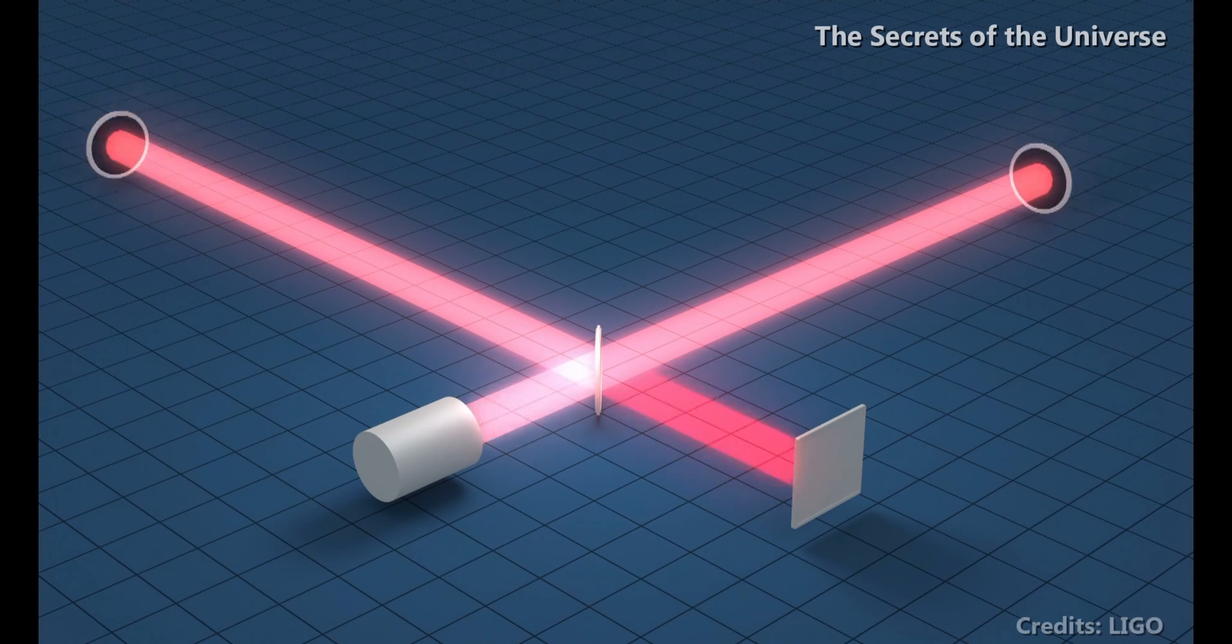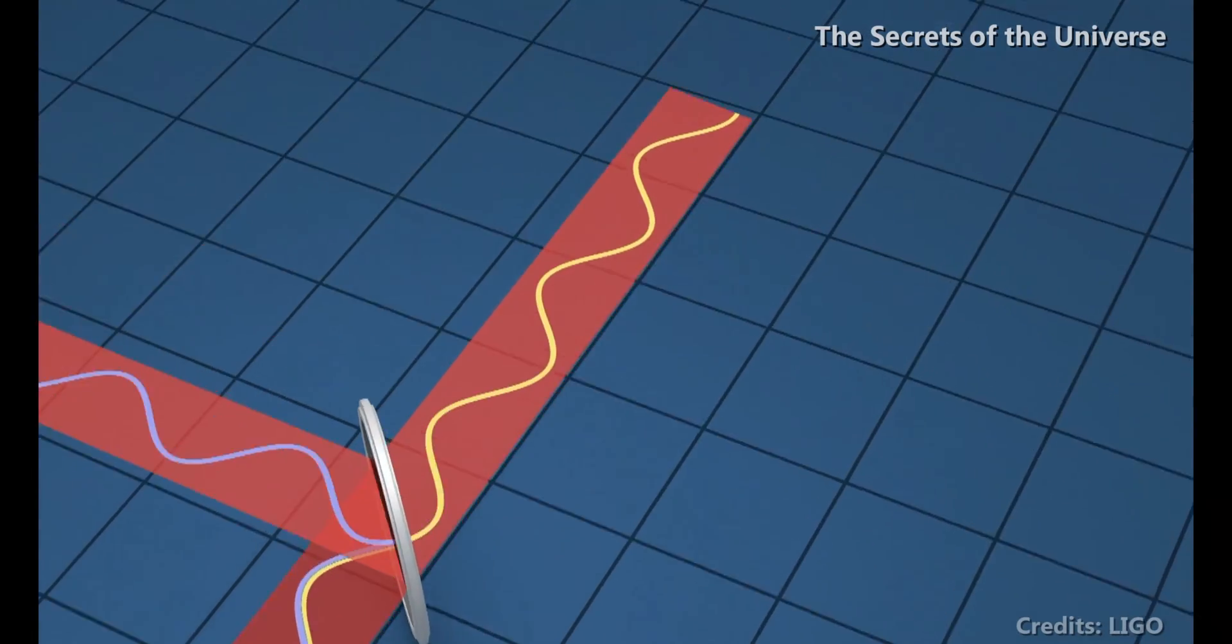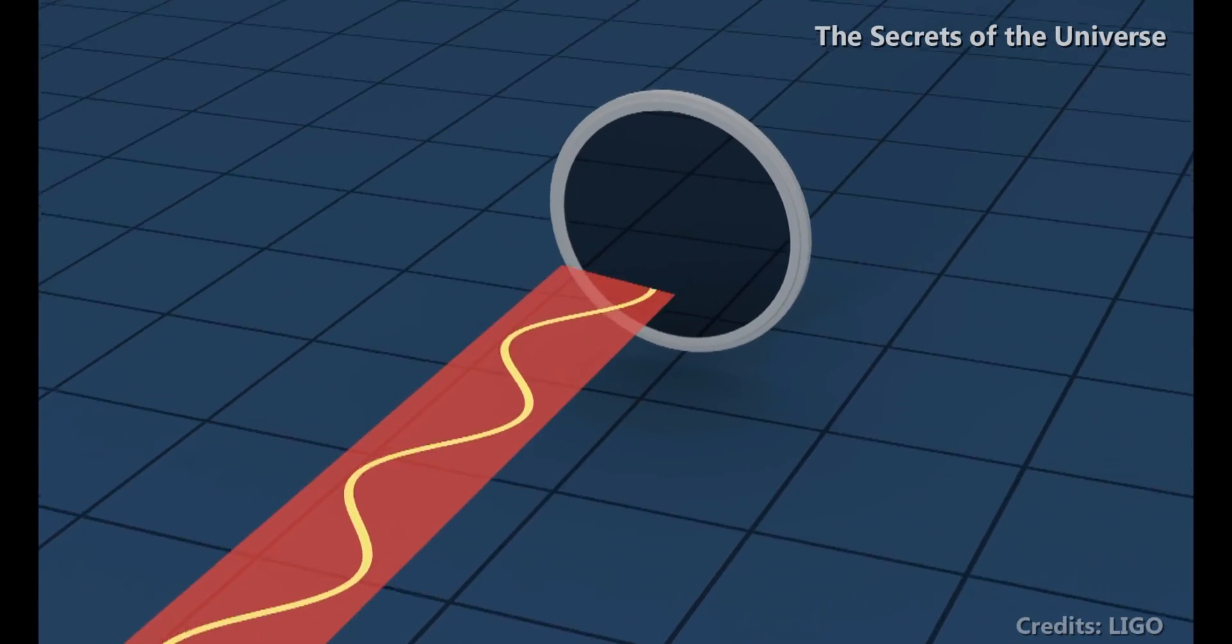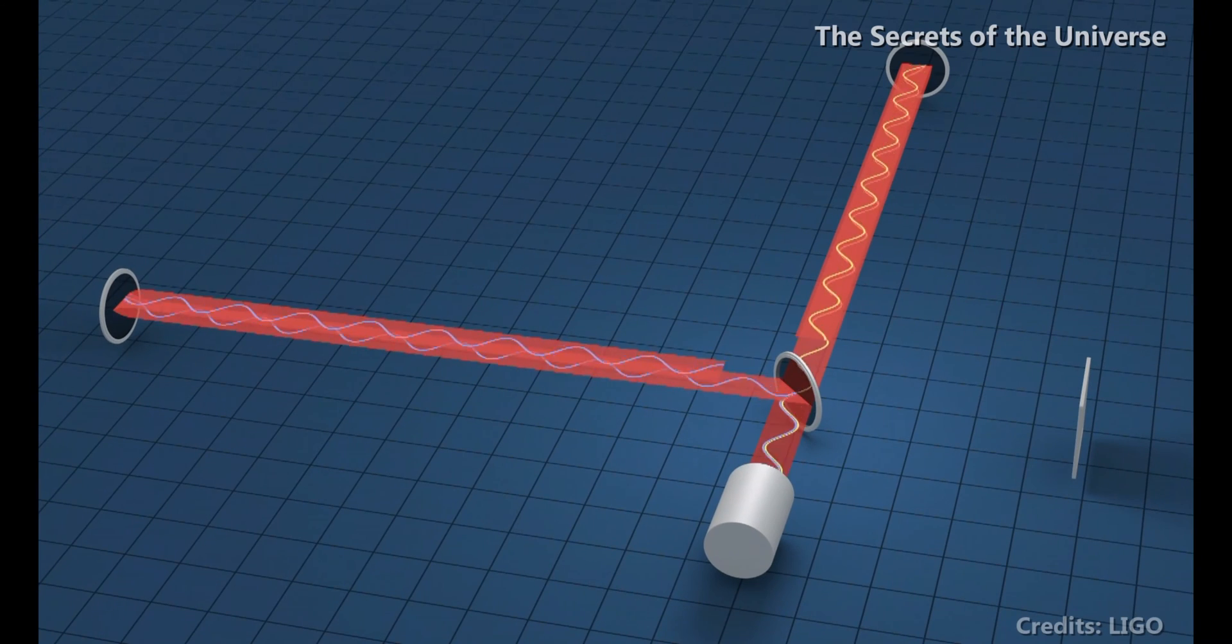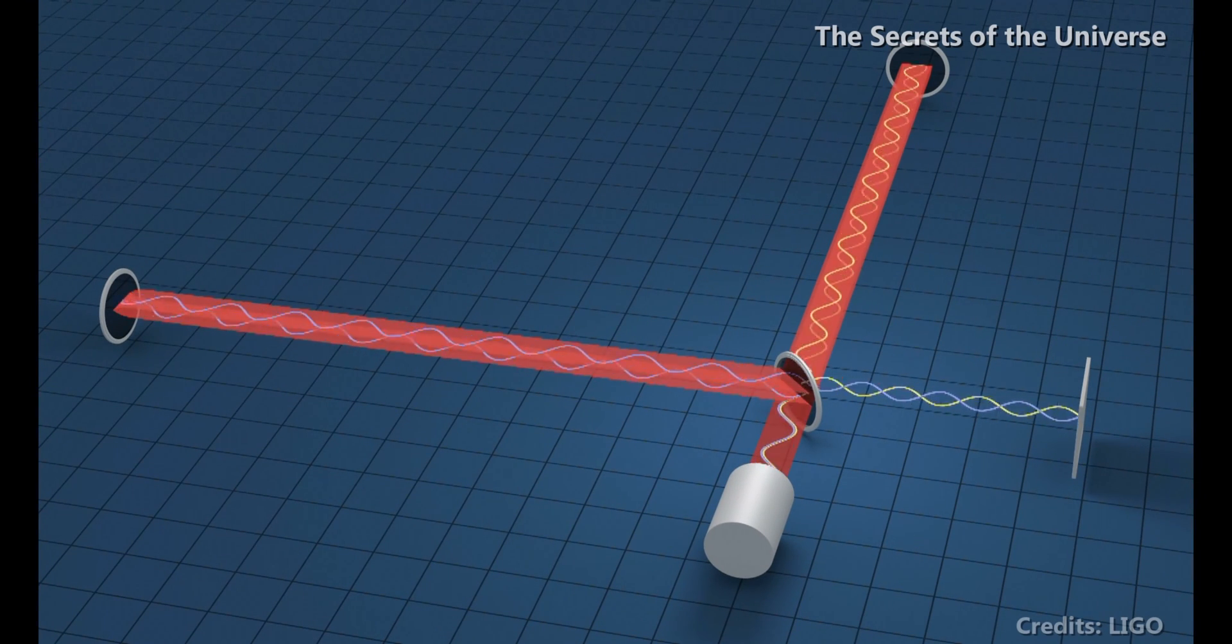The LIGO detector consists of two 4 kilometer long tunnels with laser beams traveling inside them. Known as an interferometer, this type of equipment was being used even hundred years ago by the scientists.